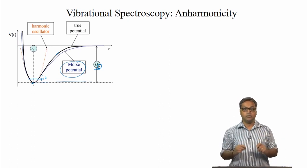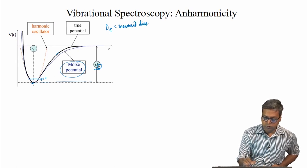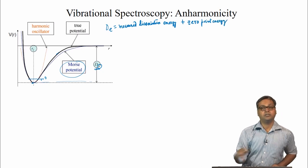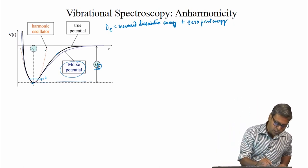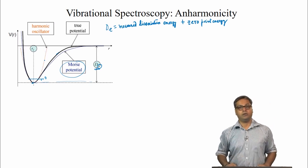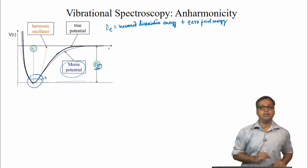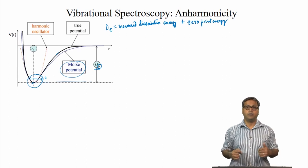The zero-point energy as we can see is slightly above the bottom of the energy well. So we never really measure D_E; what we measure is the dissociation energy from the zero-point energy level, or the V equals 0 level. Thus D_E is the sum of the measured dissociation energy plus the zero-point energy.